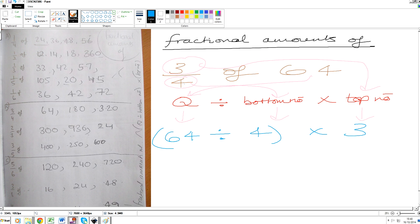So to work out fractional amounts, here's our worksheet. Here's an example: we've got 3 quarters of 64. 64 is called the question. So we get 64, we divide it by the bottom number of the fraction which is 4, and then we multiply it by the top number. That is how we work out fractional amounts.